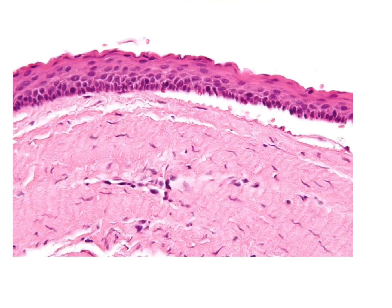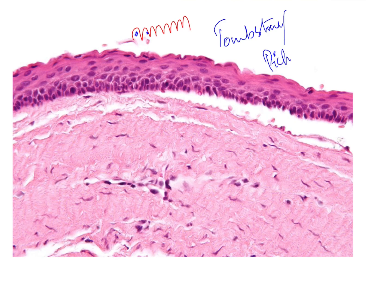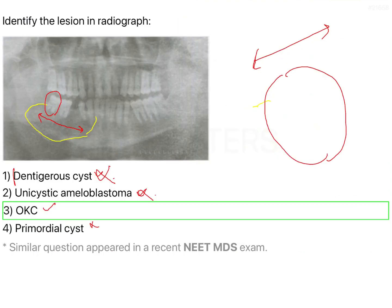Another important thing to remember is this histological picture. If you see the basal cells, they are arranged in tall columnar palisades and give what is called the tombstone or picket fence appearance. That's all there is to remember about OKC.